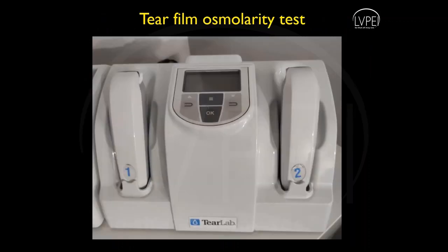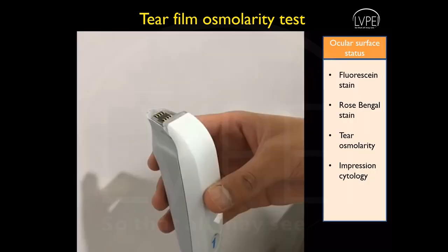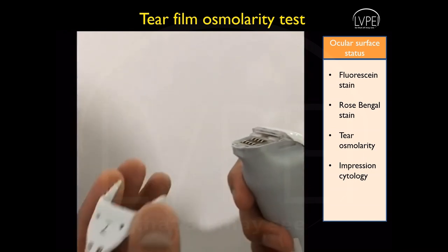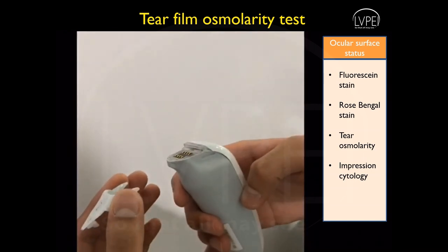Assessment of tear film osmolarity is important since it forms a major part of ocular homeostasis and is suggested to be the primary cause of ocular discomfort and surface damage in dry eye patients. We perform it with an instrument known as the TearLab, where we attach a test card onto the TearLab pen.